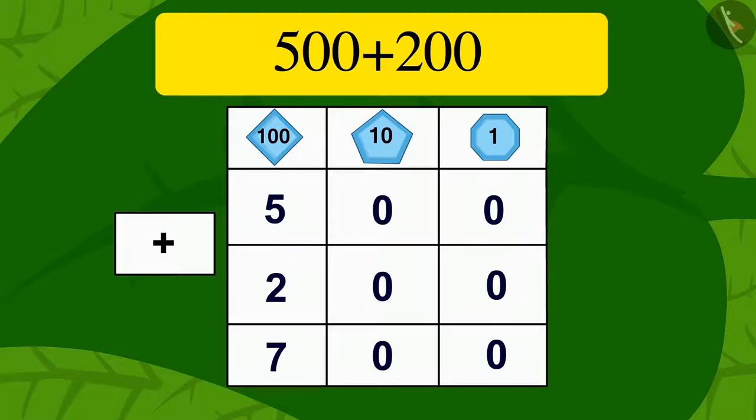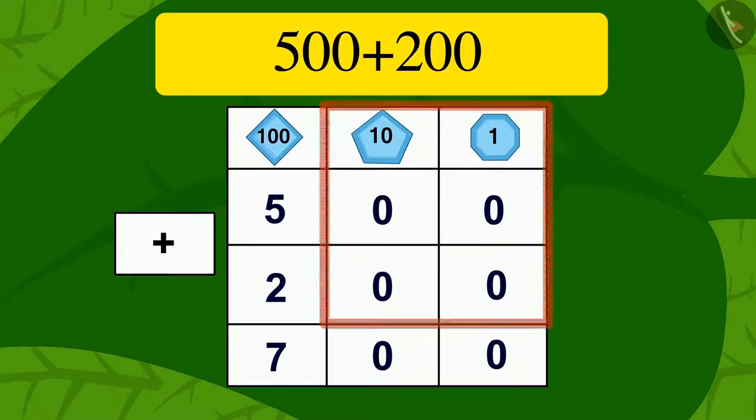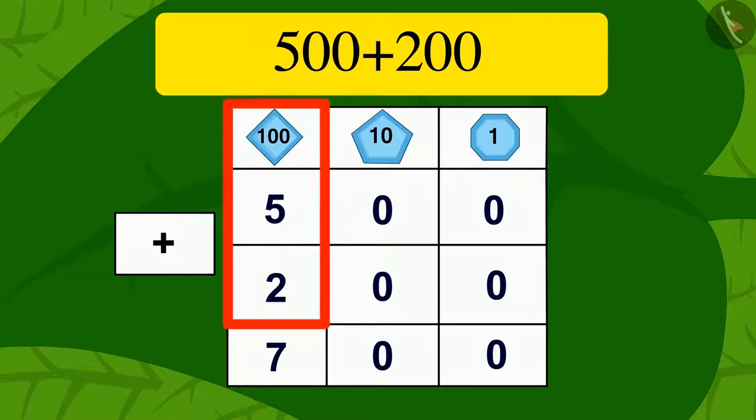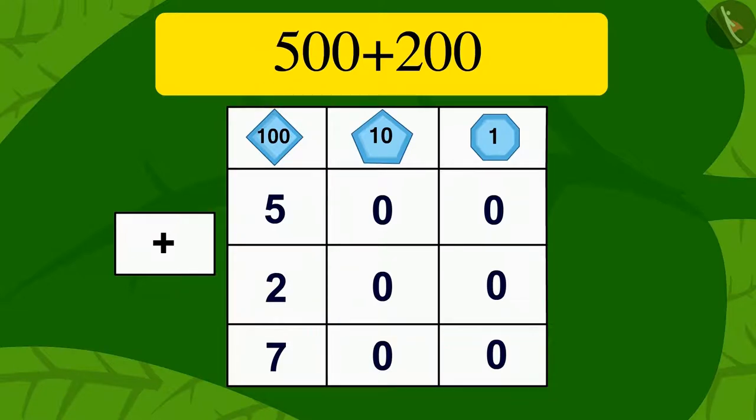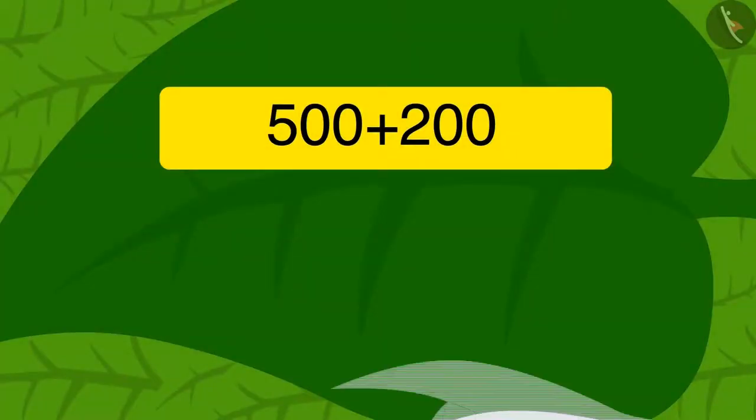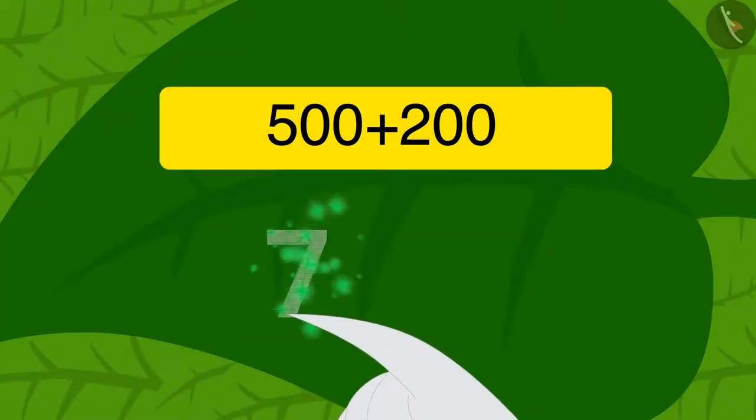Children, remember, if any two 3-digit numbers are to be added, and we have only 0 in the place of 10 and 1, we can quickly find the solution to that addition by adding two numbers written in the hundreds place and adding two zeros behind it.